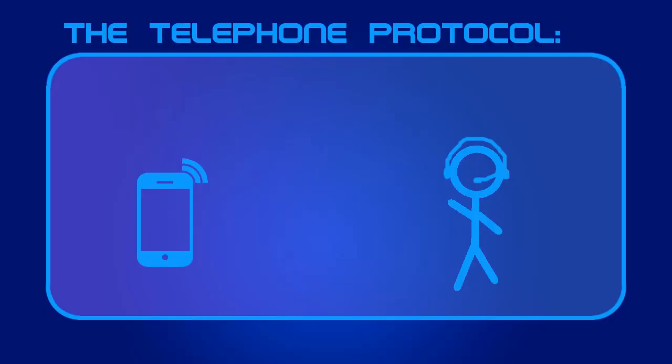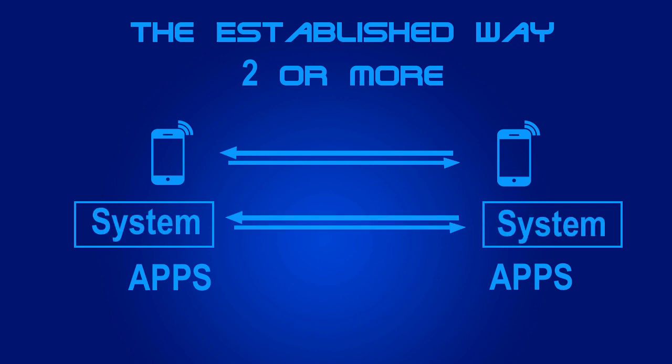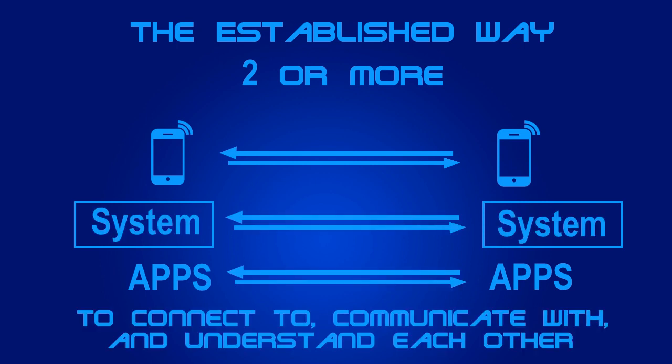Unless the other person is rude and angry — that's a whole new realm of psychology and sociology we don't want to deal with. The telephone protocol is when you call someone on the telephone, like customer service, and they respond back with something like, hi, how can I help you today? Let's keep the rudeness to a minimum. Essentially, a protocol is an established and agreed-upon way for two or more persons, devices, or systems to connect with each other, communicate with each other, and understand each other.